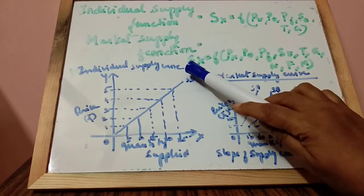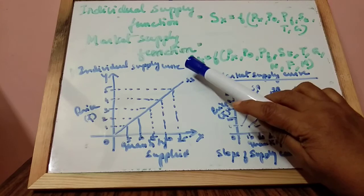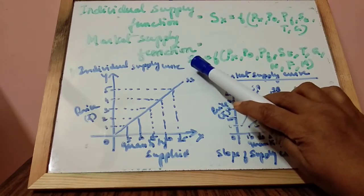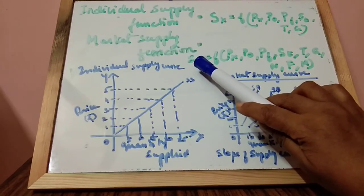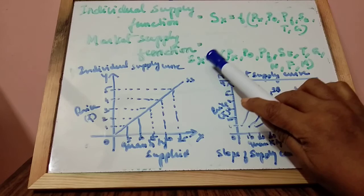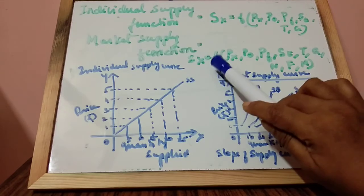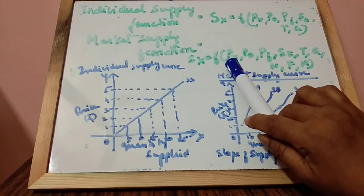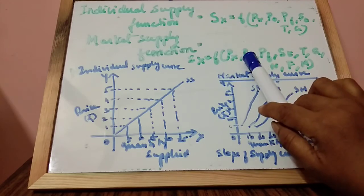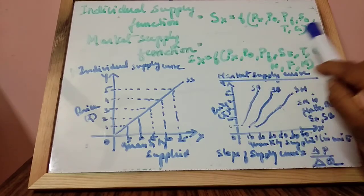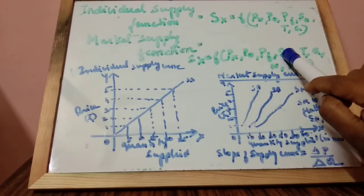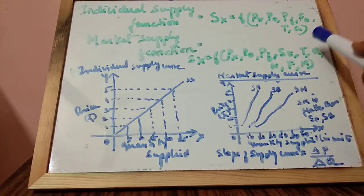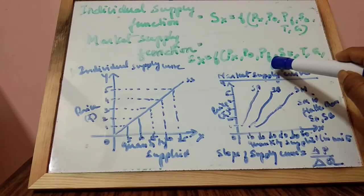Here you find SX stands for market supply of a given commodity X. That is equal to a function of PX — price of the given commodity X; price of other goods; price of factors of production; ST — state of technology; T — taxation; G — goals of the firms.